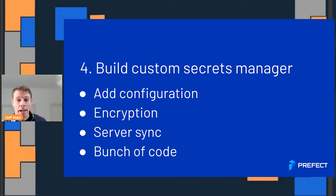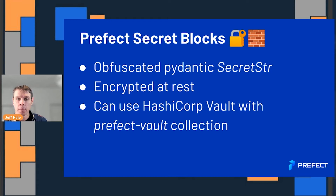The fourth option is to build your own custom secret manager — quite a challenge, figuring out all the configuration, encryption, and syncing things to a server. Just not quite my idea of a weekend project. So what you could use instead is a Prefect Secret block. It uses an obfuscated Pydantic SecretString, it's encrypted at rest, and you can even integrate it with your favorite secrets manager like HashiCorp Vault — we have an integration for that.